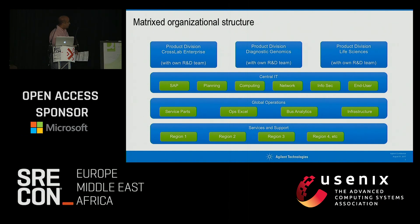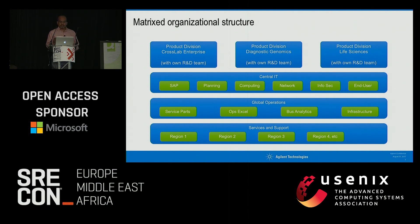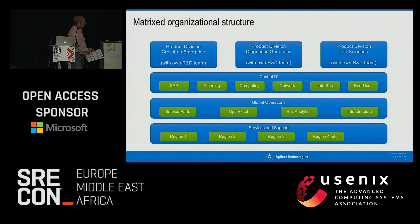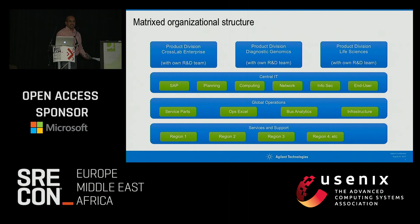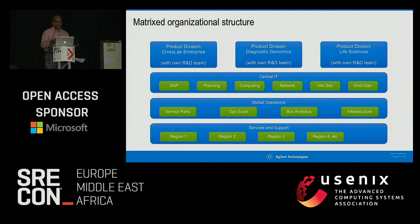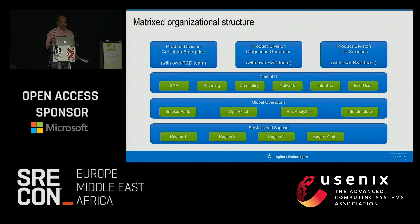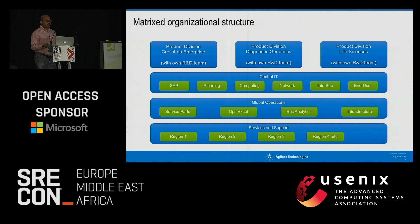Some people — and I think if Yana or Robin from ING were in the room they could sympathize — we have a central IT operations group, what we call a global operations group, and then a traditional services and support organization for our 60,000 customers. Each product division has its own software and hardware teams.